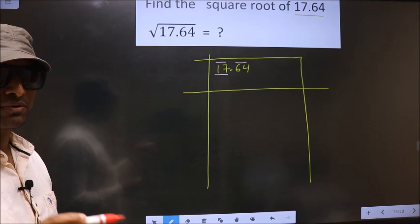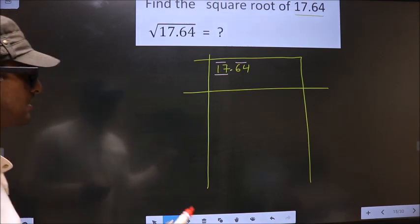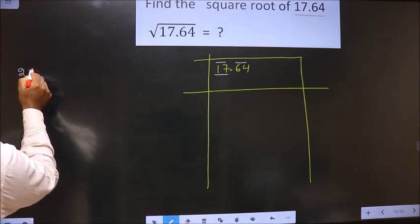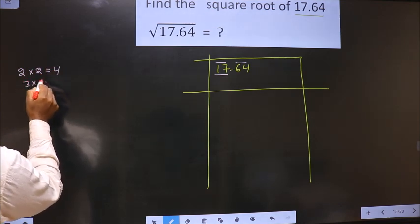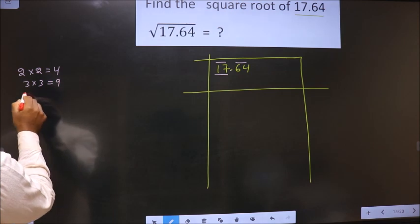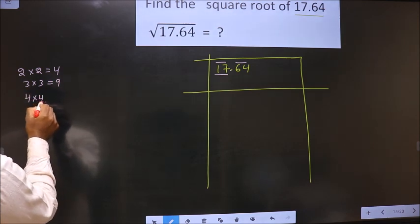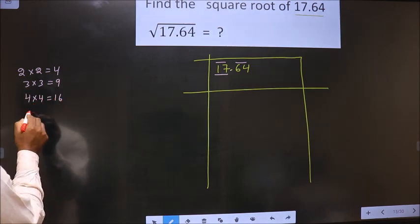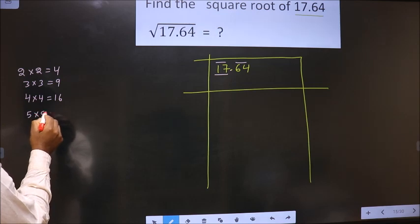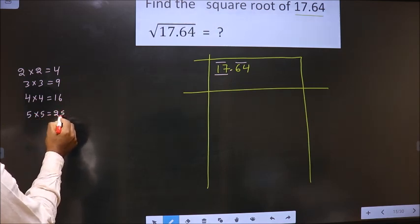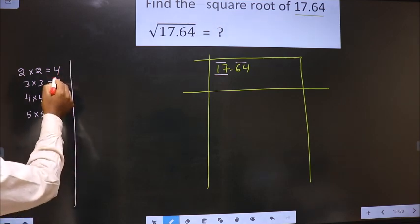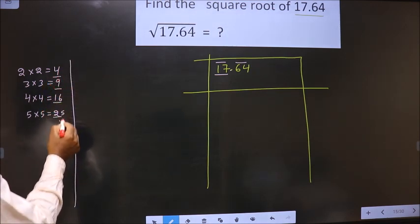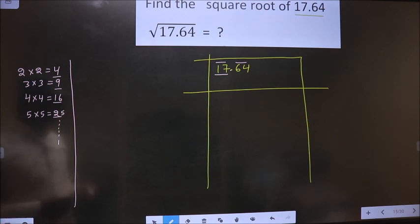Perfect square numbers are these. That is 2 into 2, 4, 3 into 3, 9, 4 into 4, 16, 5 into 5, 25 and so on. These numbers are called perfect square numbers.